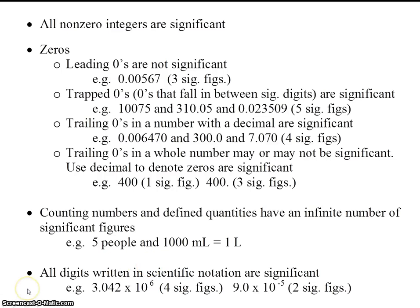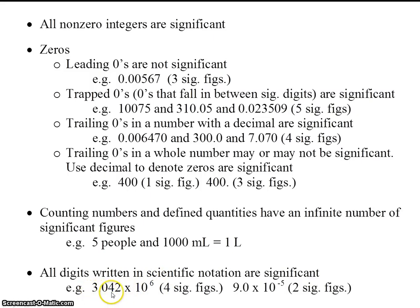The rules for scientific notation are also very simple. All digits written in scientific notation are significant — not including the exponent portion, but the digit part that comes out in front. So this has 1, 2, 3, 4 sig figs. This number has 1, 2 — 2 sig figs.